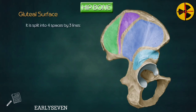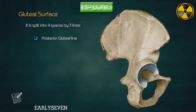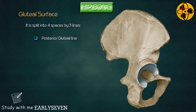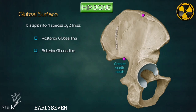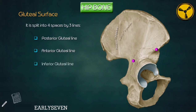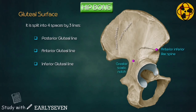It is split into four spaces by three lines. The posterior gluteal line is the shortest, extending from the outer lip of the iliac crest five centimeters anterior to the posterior superior iliac spine, till a point right in front of the posterior inferior iliac spine. The anterior gluteal line is the longest, extending from the middle of the upper border of the greater sciatic notch to become continuous with the outer lip of the iliac crest. The inferior gluteal line extends from above and behind the anterior inferior iliac spine, running down and back till the upper part of the greater sciatic notch.